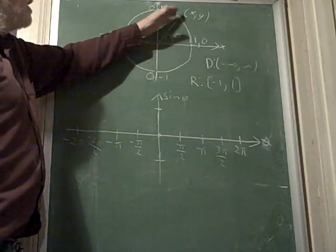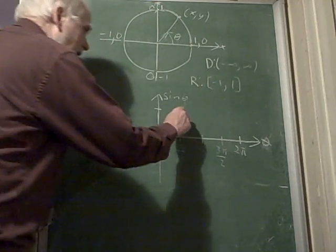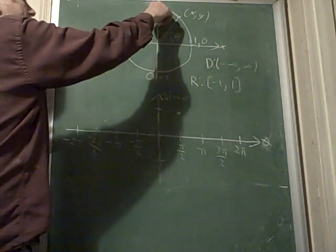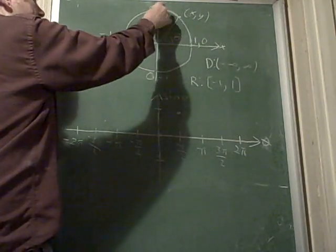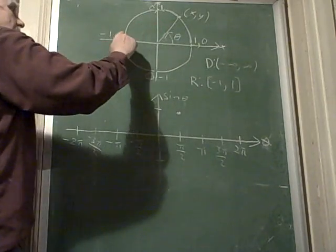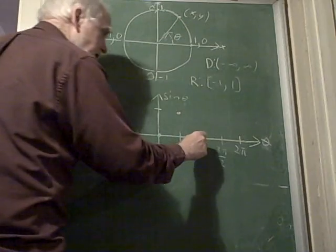And as the angle moves like this, the y value is getting bigger and bigger until it hits 1. So I have a 1 here at pi over 2. When the angle goes to pi over 2, the y value is 1. Here it's 0 at 0. And then as it moves from pi over 2, like this, over to pi, my sine goes back to 0 again.